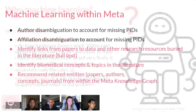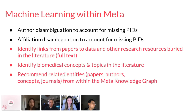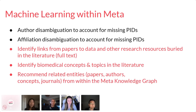We need to apply machine learning to a number of different areas within Meta. Some of these include author disambiguation and affiliation disambiguation. Today in this session, we're going to dive into the last three: identifying links from papers to data and other research resources buried in the full text of a paper; identifying concepts and topics in the literature; and recommending related entities. So let's go ahead and dive into the first area where we use machine learning.